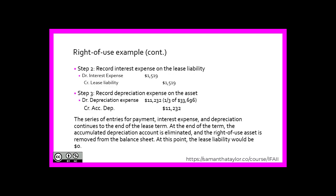The next step is to record the interest expense on the outstanding liability for the year, which increases interest expense and the corresponding lease liability. We then need to record depreciation, which is one-third of the present value of the lease payments — since it is a right-of-use asset over the period the company is leasing it. So one-third of $33,696 is recorded as depreciation expense with corresponding accumulated depreciation.